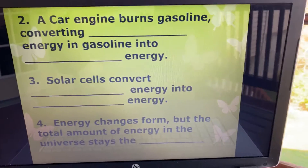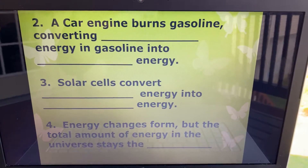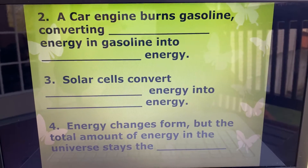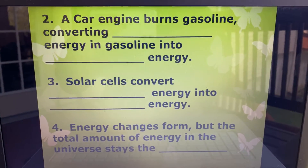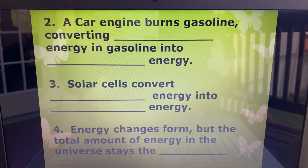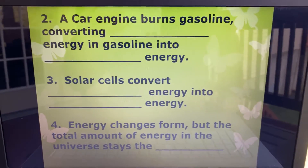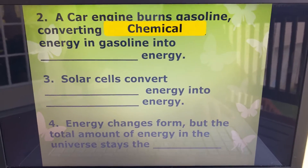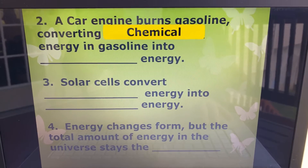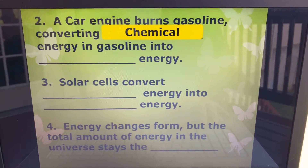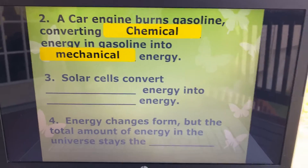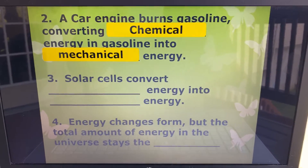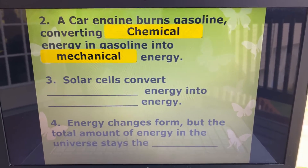Question number two: a car engine burns gasoline, converting blank energy in gasoline into blank energy. Where's the energy stored in the gasoline? It's stored in the chemical bonds inside those chemicals found in the gasoline. So it converts that chemical energy into mechanical energy. The engine burns the gas, the gas releases the energy, it spins the pistons and camshaft inside the engine — that's mechanical energy, the energy of motion.